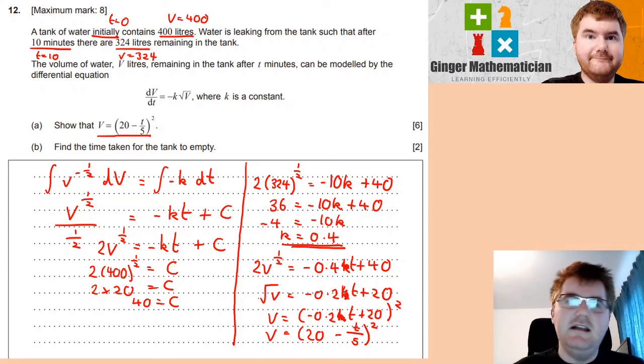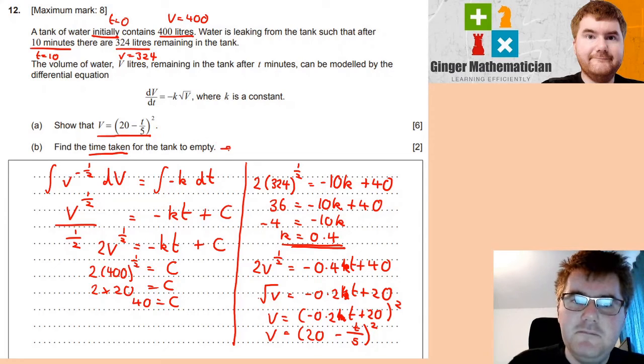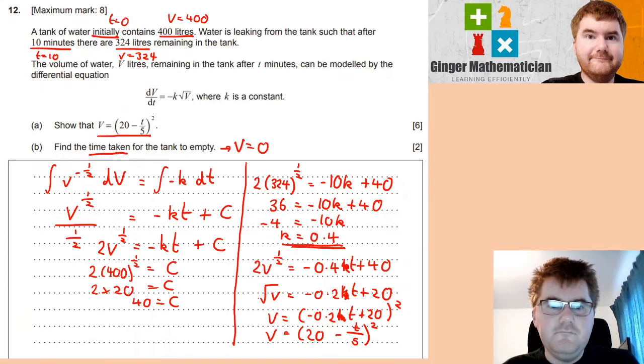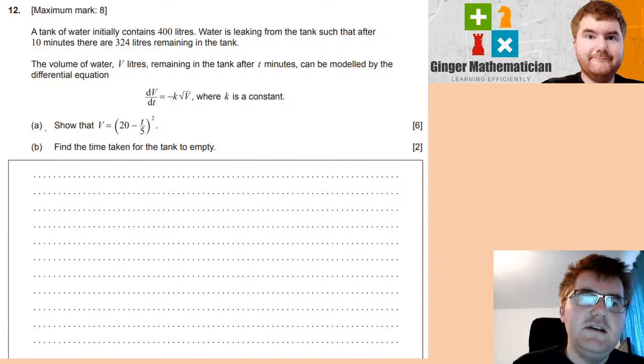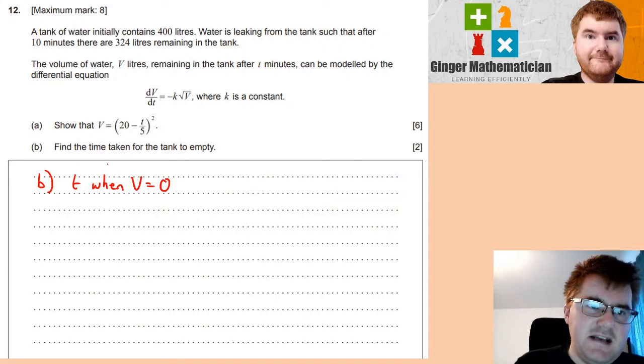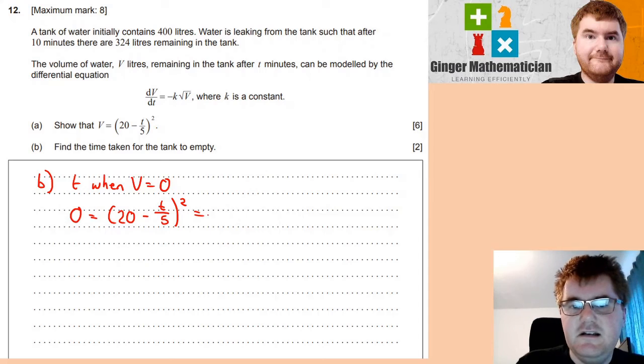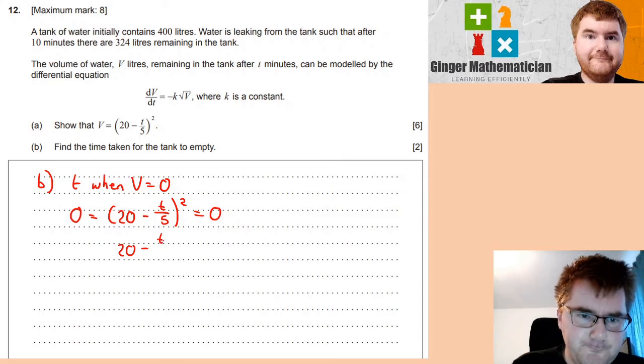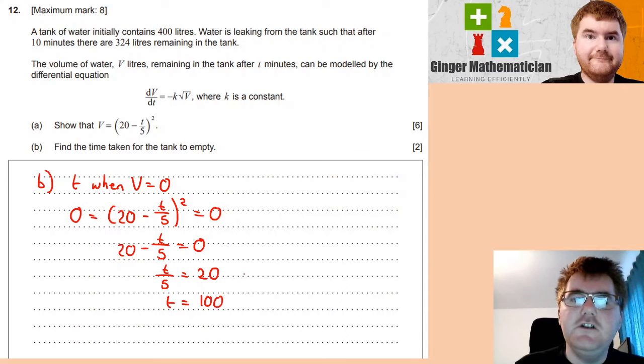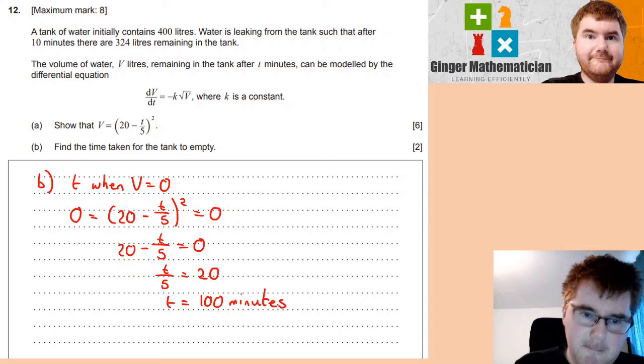And now, we need to use that answer in the last part. So, find the time taken for the tank to empty. So, we want V is equal to 0. So, now, we need to find the time taken for the tank to empty. So, we want to find T when the volume is equal to 0. Therefore, we take that expression here. 0 is equal to 20 minus T over 5 all squared is equal to 0. Therefore, we know then the bracket has to be equal to 0. So, this is just a straightforward equation to solve here. T over 5 is equal to 20. So, then, T is equal to 100. And we want the correct units here equal to 100 minutes.